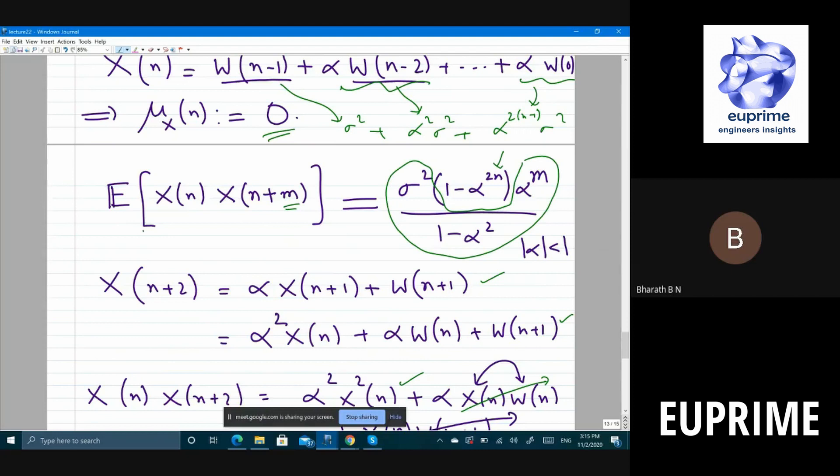So now if you choose n sufficiently large, what will happen to α^(2n)? If α is less than 1—of course it has to be less than 1, right? Modulus of α should be less than 1—so α^(2n) will go down to zero. So for sufficiently large α, this is approximately... it depends only on m, it doesn't depend on n.